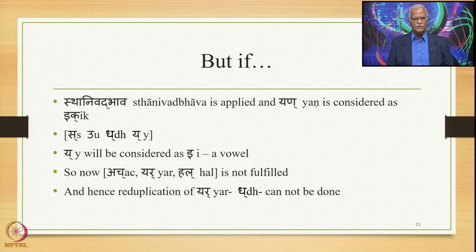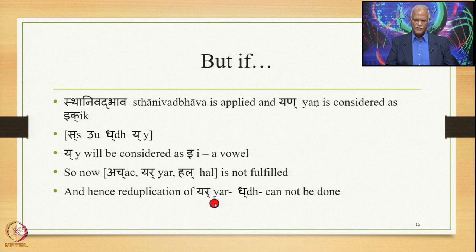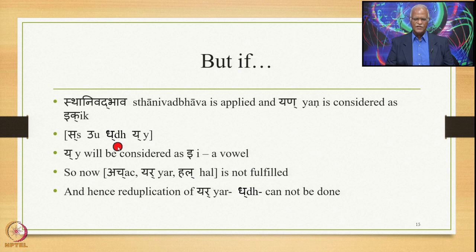But if Sthanimat Bhava is applied and Yer is considered as E (a vowel), then the sequence becomes Ach + Yer + Ach rather than Ach + Yer + Hal, and the condition for 8.4.47 remains unfulfilled. So if Sthanimat Bhava is applied, the reduplication is negatively affected.